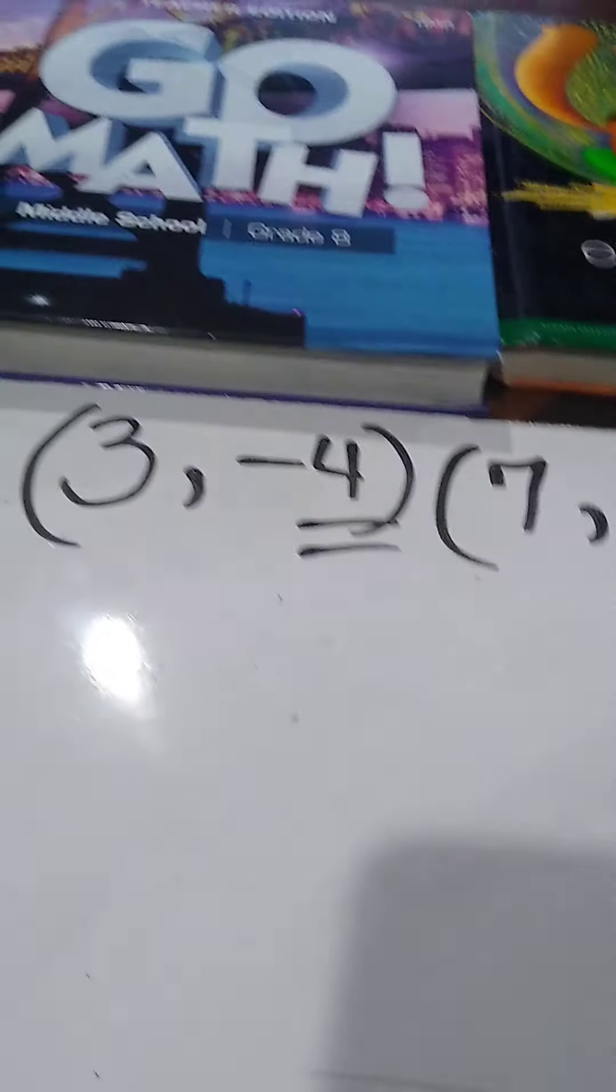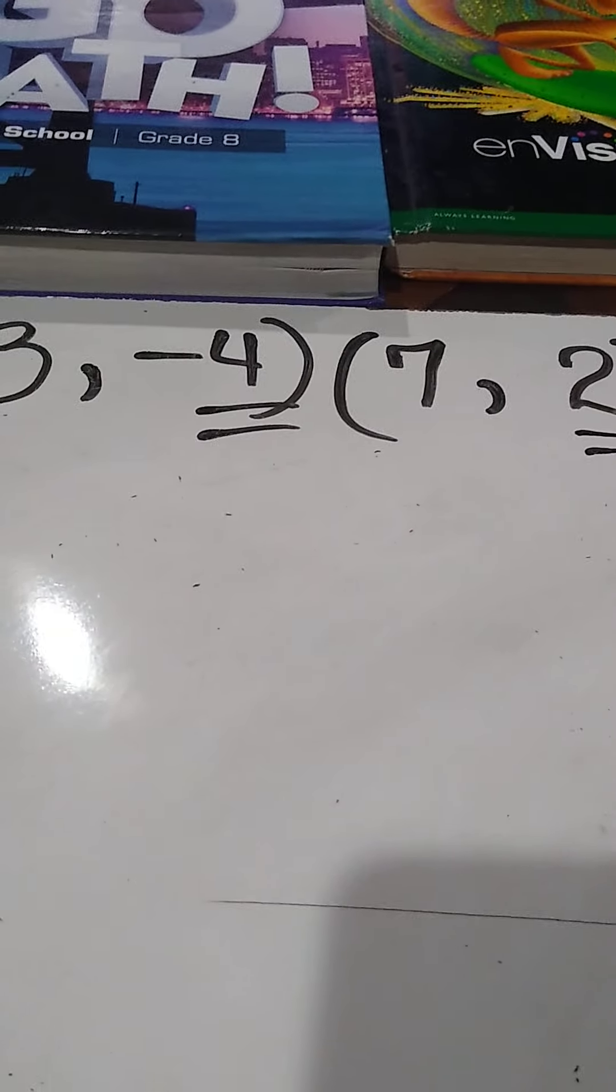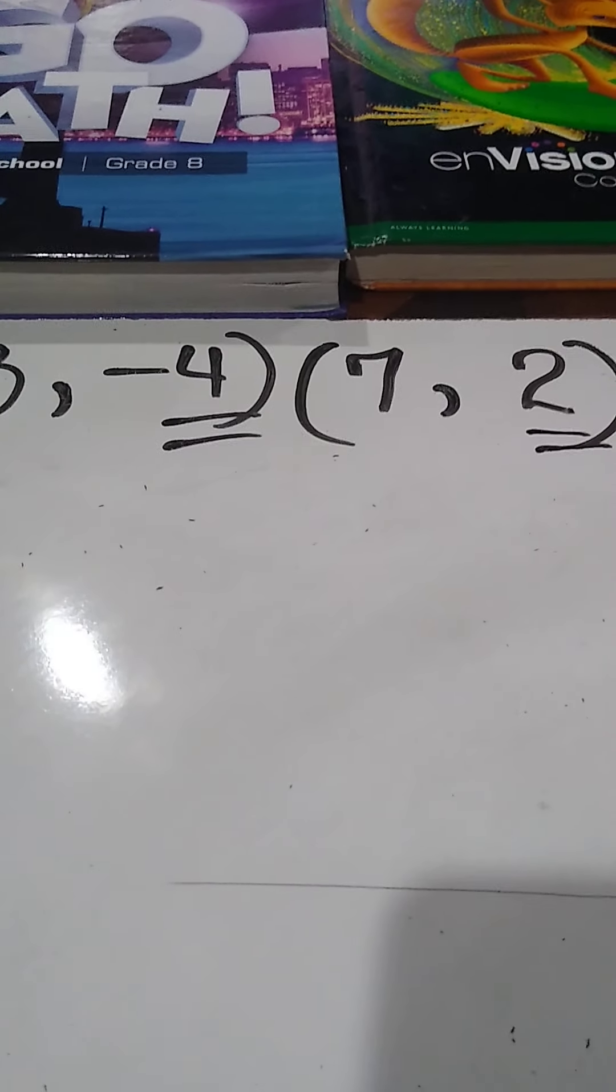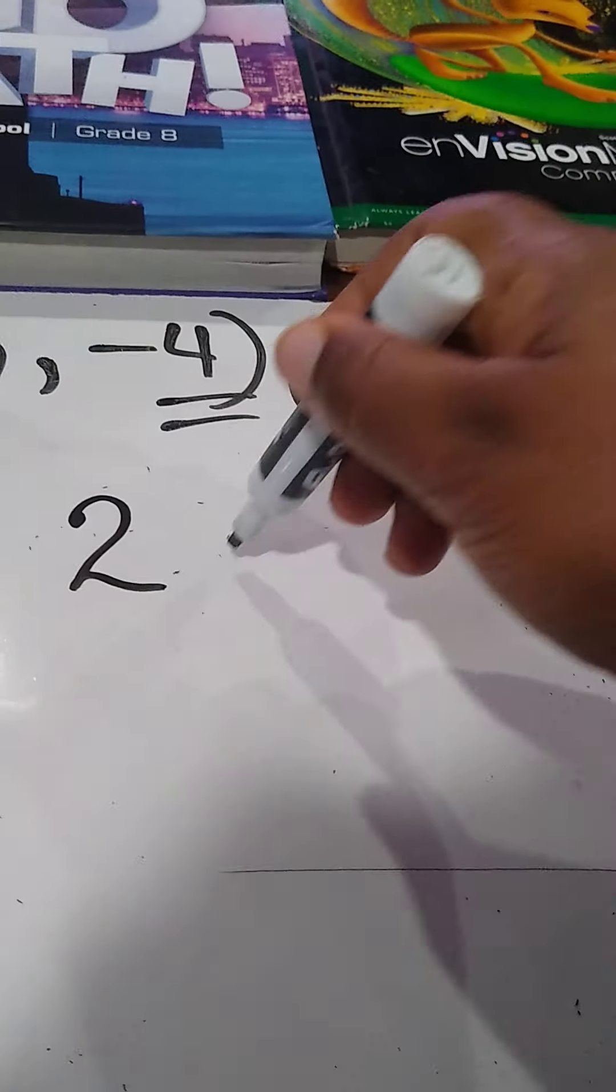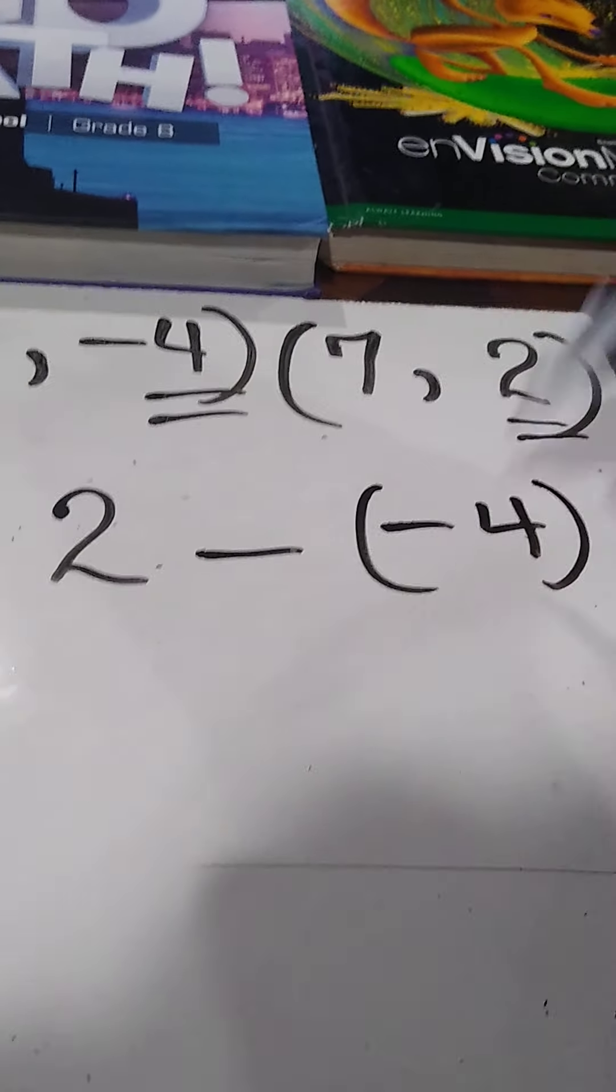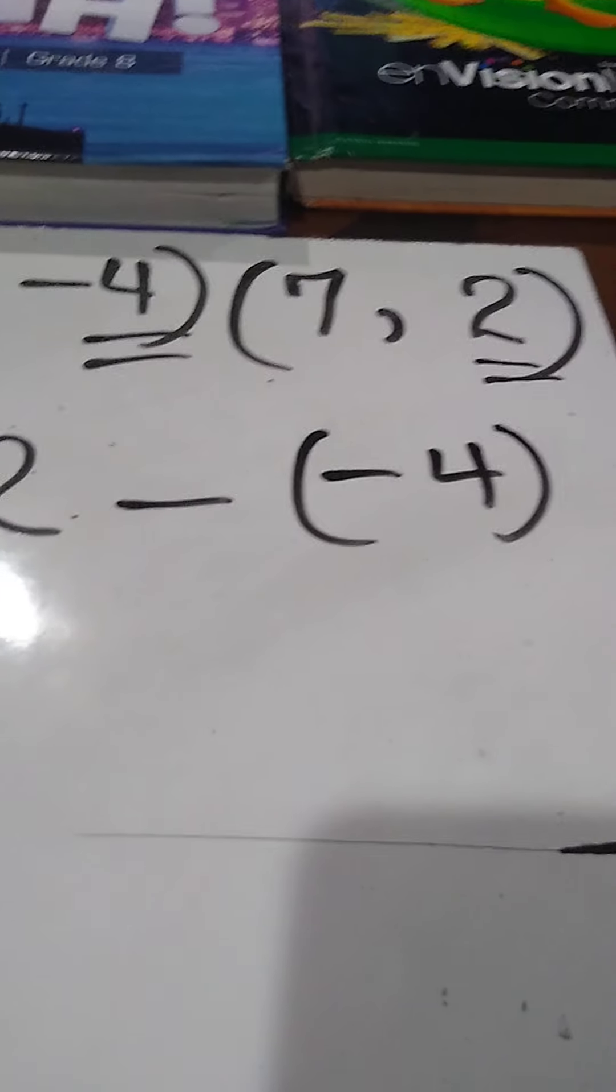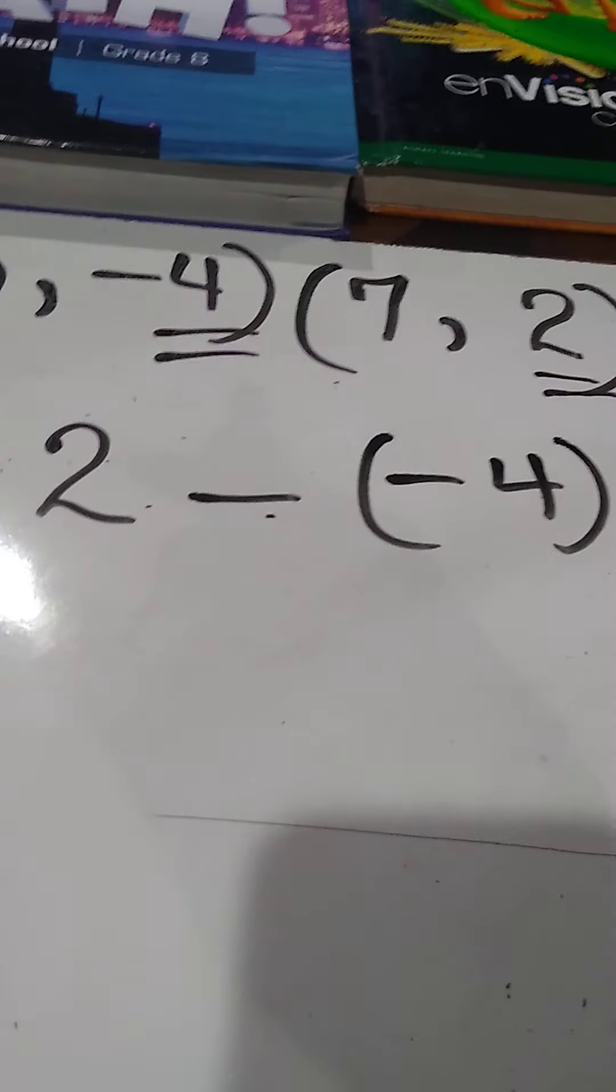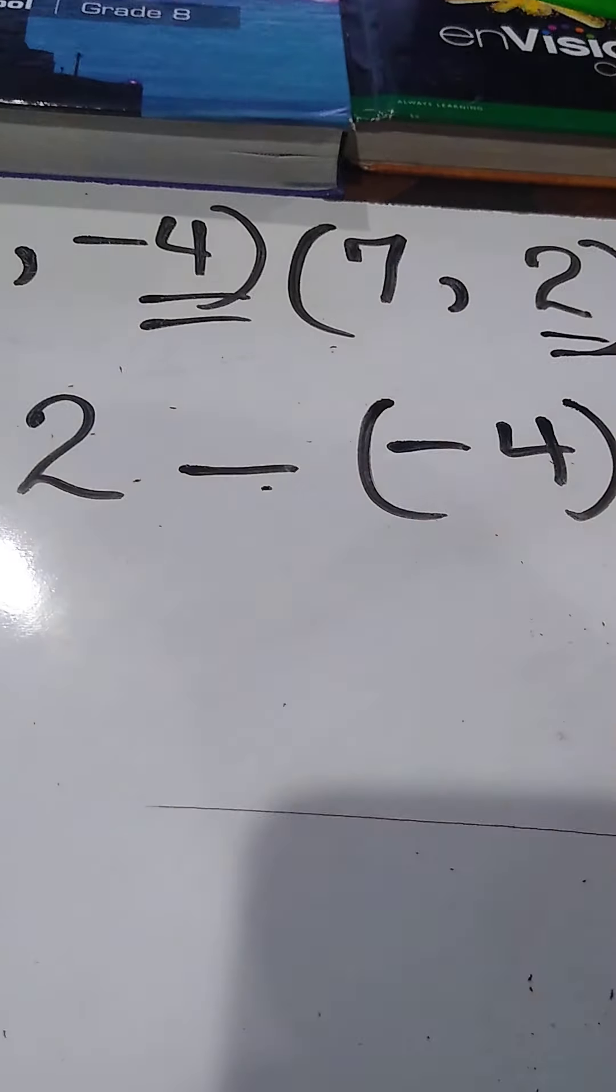Remember, we started with -4. This time I'm going to start with positive 2, because that's the y coordinate. So I'm putting 2 take away -4. I'll put it in parentheses to remind you the 4 is negative - it has nothing to do with the subtraction sign. We're subtracting to find the difference between the two.